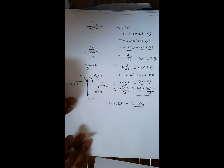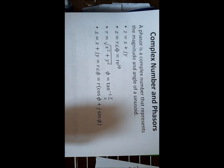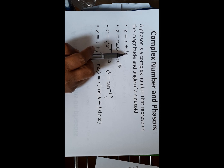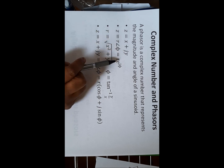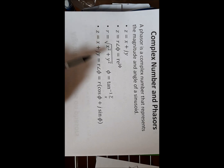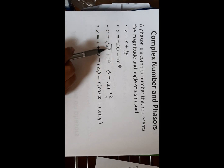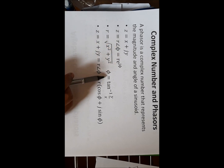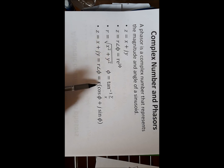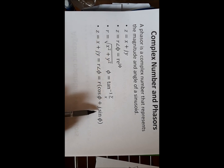A phasor is a complex number that represents the magnitude and angle of a sinusoid, like z = x + jy, which has a real part and imaginary part — this is the rectangular or Cartesian form. The polar or phasor form is r∠θ. To convert from rectangular to polar: amplitude r = √(x² + y²) and phase angle θ = tan⁻¹(y/x). To convert from polar to rectangular: x = r·cos(θ) and y = r·sin(θ).